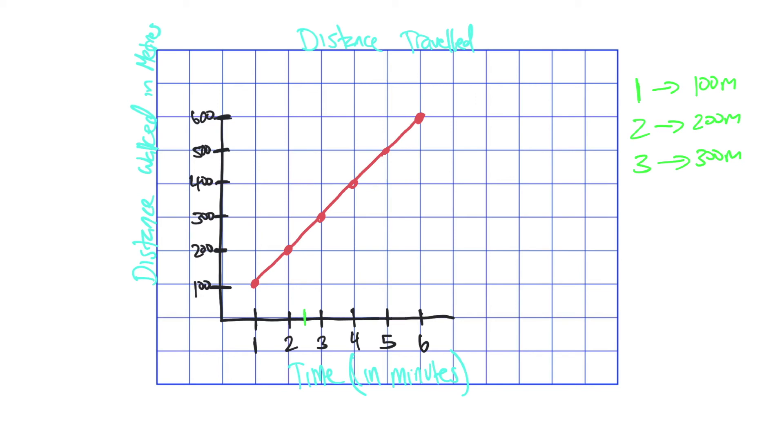So you would grab a ruler and just draw a line up to here and then from here you would draw a line going to here and you'll see that in two and a half minutes you've walked approximately 250 meters.